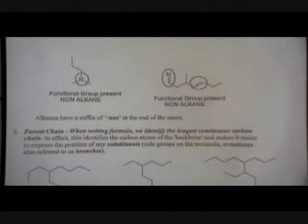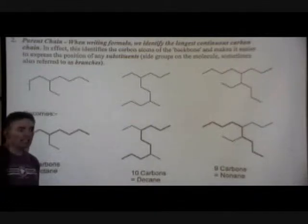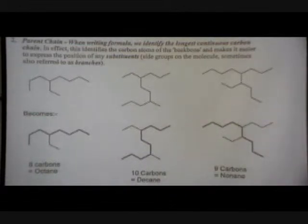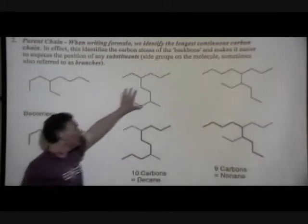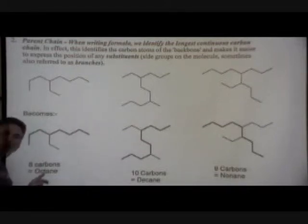For the parent chain - the core of the molecule - we are looking at the line-angle formula and we are looking at the longest, the absolute longest continuous chain of carbons without doubling back on ourselves. Look at the molecule and decide from one tip to another where the longest possible chain is. For the first example, the longest possible chain is eight carbons long, based on the first ten named alkanes.